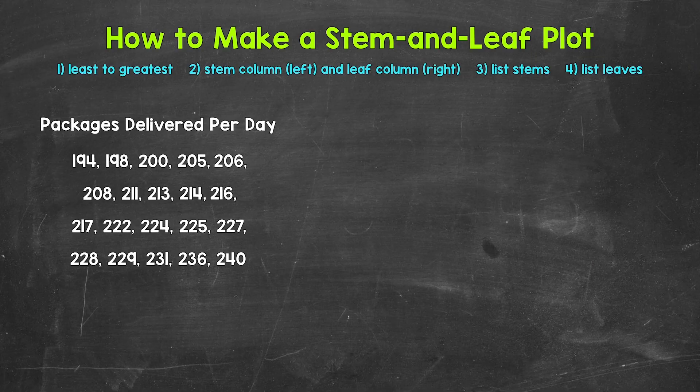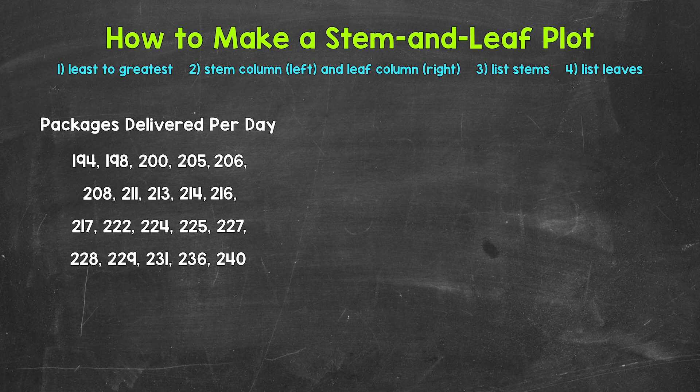So that was our two-digit example. Let's move on to our three-digit example. We have the number of packages delivered per day by a delivery person over the past 20 days that they have worked. The first thing we need to do is order the data from least to greatest. For this example, the data is already in order from least to greatest, so we can move on to creating the stem and leaf plot.